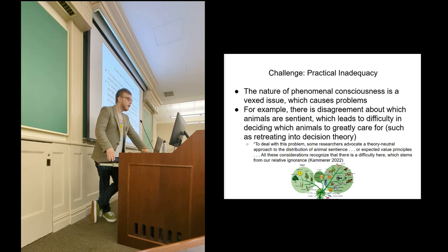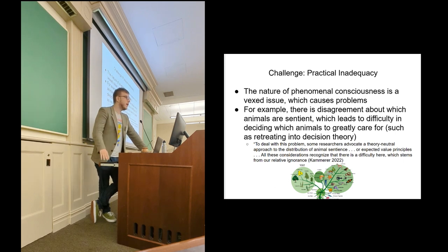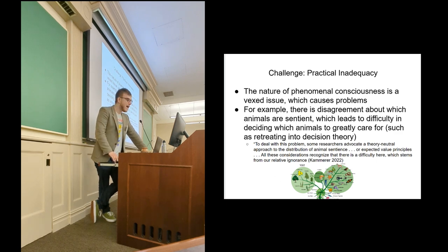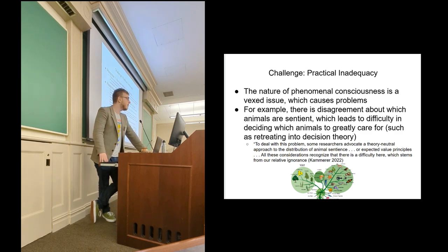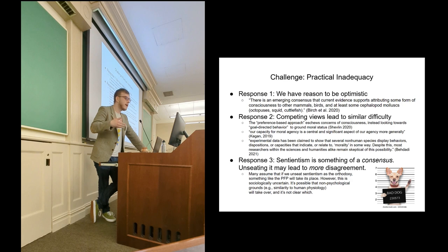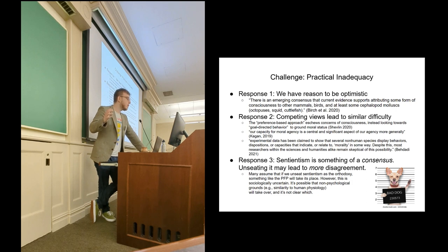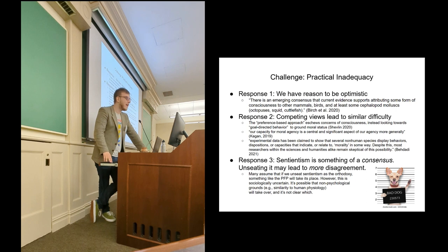François Kammerer points out, you know, we can turn to decision theory. There's a whole academic discipline built on making actions in imperfect information, right? So we can turn to that, but that is a concession. There's a problem here. And I have a somewhat optimistic and somewhat pessimistic answer to this. The first is we have reason to be optimistic is that we do see a little bit of convergence. For instance, as Birch reports, there's an emerging consensus that current evidence supports attributing some consciousness to mammals, birds, cephalopods. So we do see that the scientists are coming to some convergence, and usually it's a broadening of the conception of which creatures can be conscious. The second response I want to give is a little more pessimistic. It's that, look, it doesn't matter what we do. Ethics is hard.